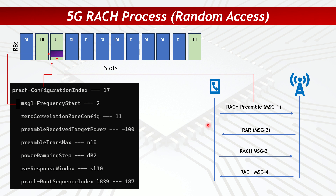Another issue is that the UE cannot receive the RAR (Message 2). In that case we need to determine whether the failure is in the PDCCH or the PDSCH carrying Message 2. A third issue is that the UE can decode the RAR but the gNodeB cannot decode Message 3. Since Message 3 is an uplink message, there is a power delta between the RACH preamble and Message 3. We need to increase that delta to boost Message 3 power so it is decoded successfully by the gNodeB.